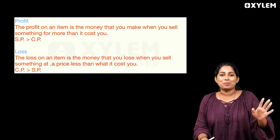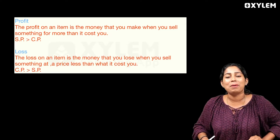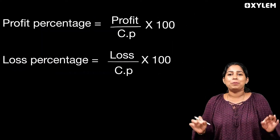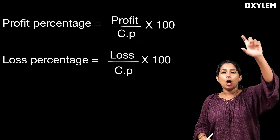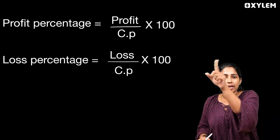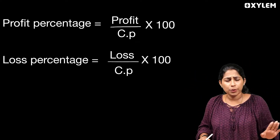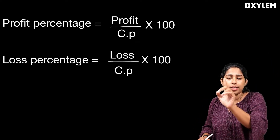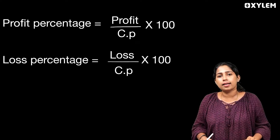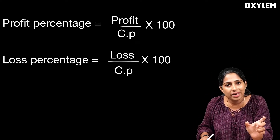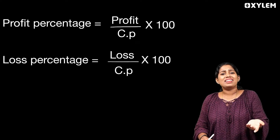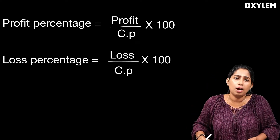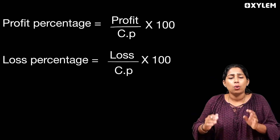Now, the two key equations: Profit percentage equals profit divided by cost price, multiplied by 100. Loss percentage equals loss divided by cost price, multiplied by 100. These are the formulas for profit and loss percentage.